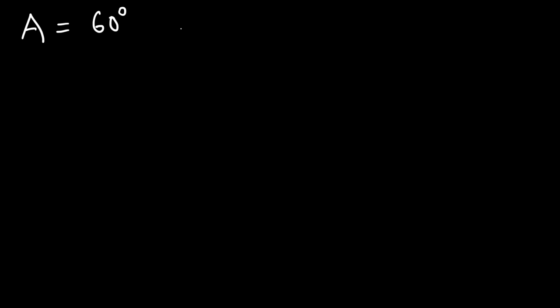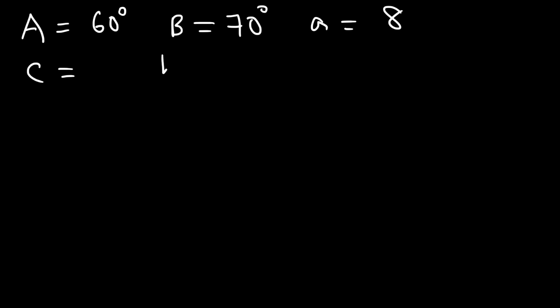So let's work on an example. Let's say we're given angle A which is 60 degrees, and we're given angle B which is 70, and also side A which has a length of 8. Go ahead and solve the triangle — you want to find everything that's missing: angle C, side B, and side C.